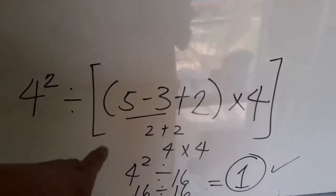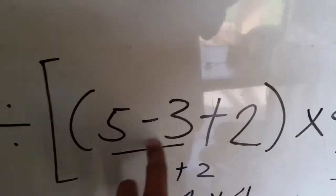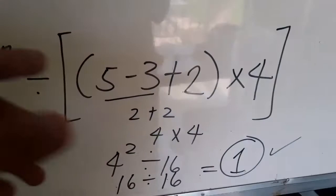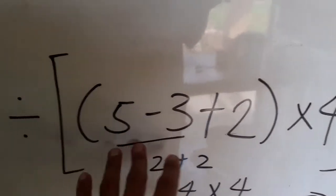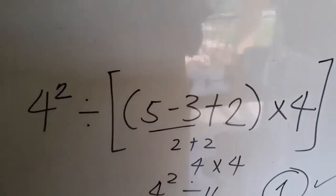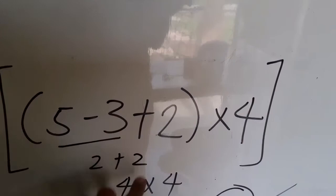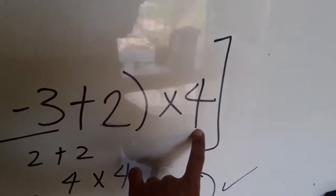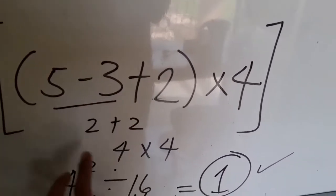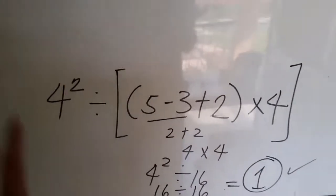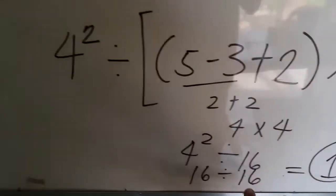We also have the exponent after the grouping symbols. So let's start here: five minus three plus two. This is the innermost grouping symbol — the parenthesis. What are you going to do first? Are you going to subtract five minus three, or add three plus two? Whichever comes first — so subtraction comes first. Five minus three gives us two, then two plus two gives us four. Then you multiply by four: four times four gives us sixteen.